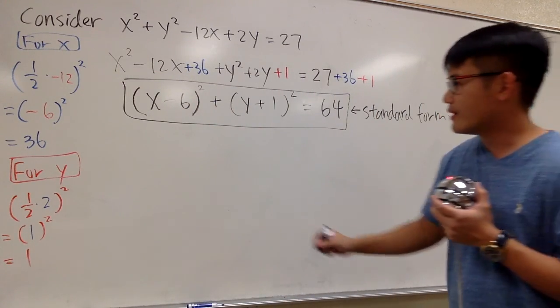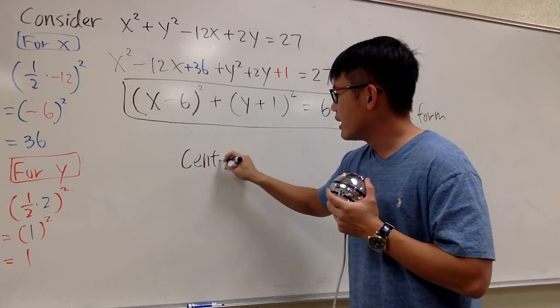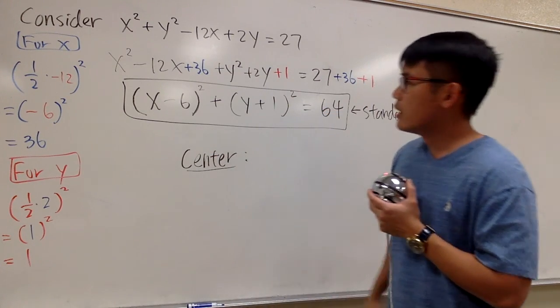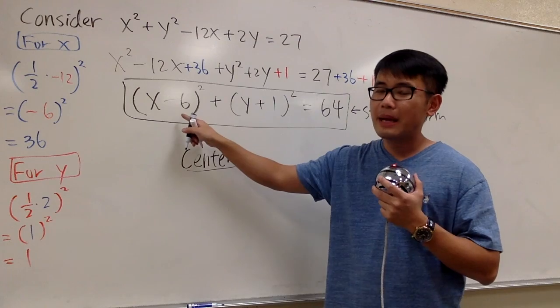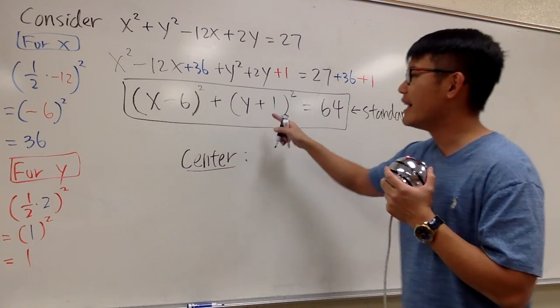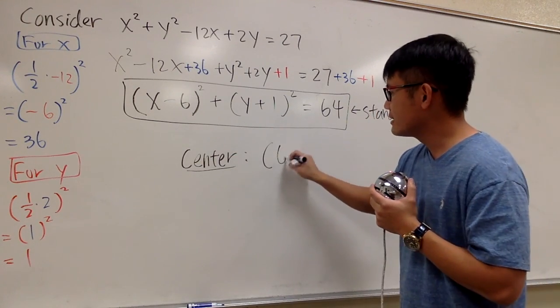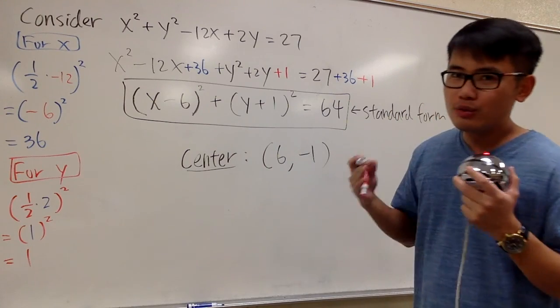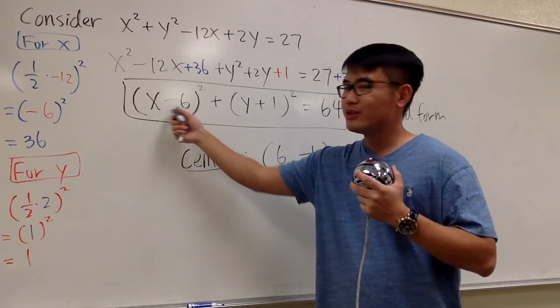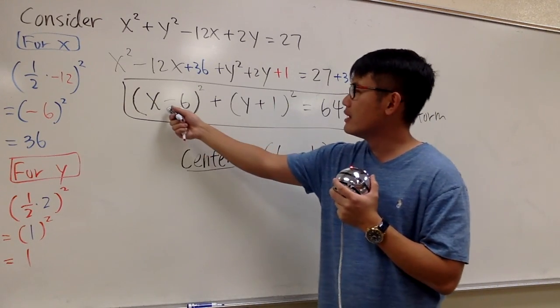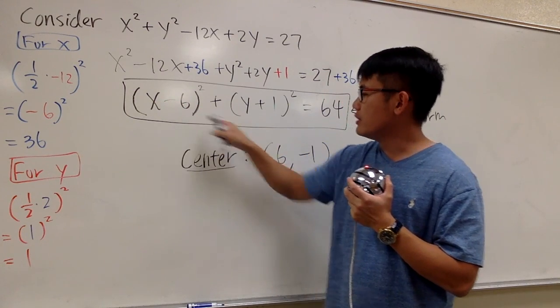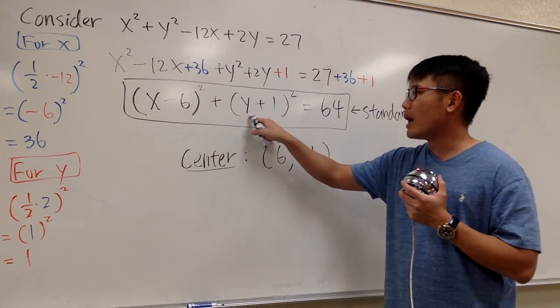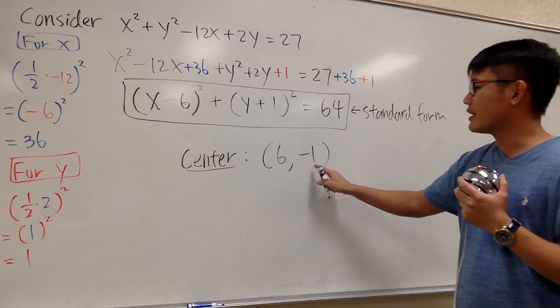And can we figure out the center? Let's figure this out right here. The center is going to be positive 6 and negative 1. Positive 6, negative 1. Remember, it's the opposite. What you see inside of the parentheses, it's the opposite. It's x minus 6 right here, but it's actually just a 6. And then this is y plus 1, but it's actually negative 1.